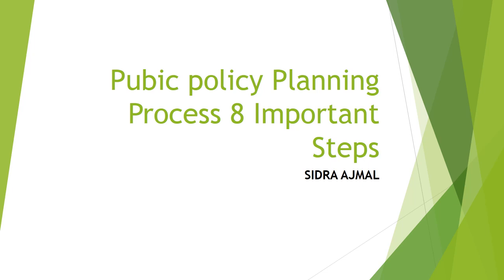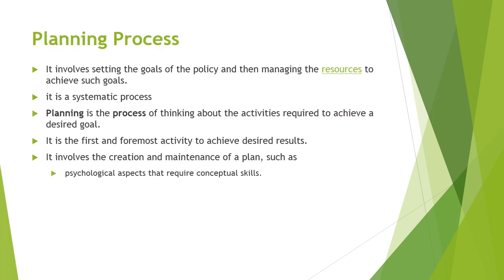Today our topic is about public policy planning process — eight important steps. The planning function of policy making is one of the most critical ones. It involves setting the goals of policy and then managing the resources to achieve such goals. It is a systematic process involving eight well-thought-out steps.